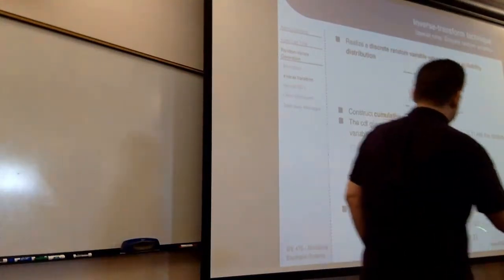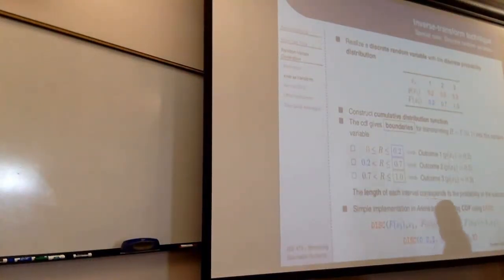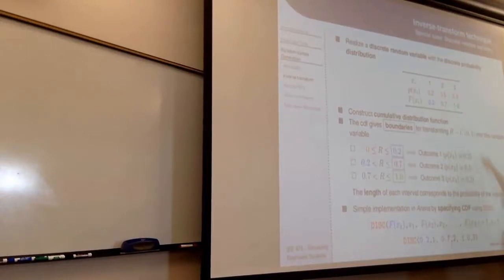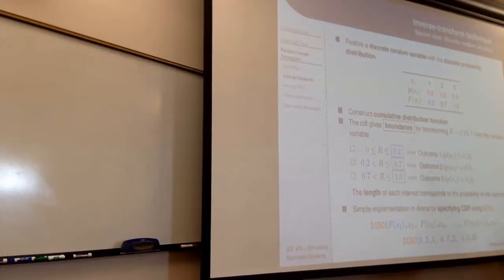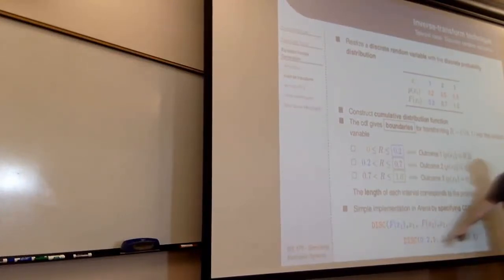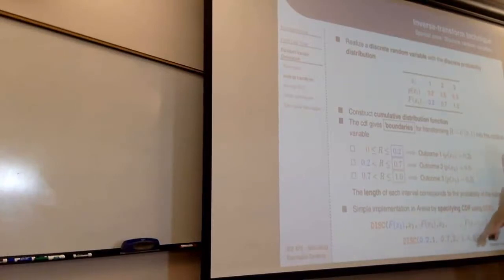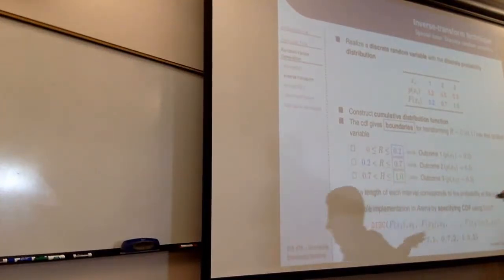You should become familiar with this, and it wouldn't surprise me if the midterm has questions testing your familiarity with this notation — going from a CDF into Arena and back. A big thing to note: a lot of people get confused because they think the DISC function encodes the PMF probabilities, but it actually encodes the CDF. So all of these probabilities have to increase — it has to go 0.2, 0.7, 1.0. It can't go 0.2, 0.5, 0.3. If you try that, Arena will give you an error saying these must be monotonic. They also always have to end in 1.